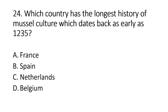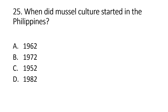Number 24. Which country has the longest history of mussel culture, which dates back as early as 1235? A. France. B. Spain. C. Netherlands. D. Belgium. The answer is letter A, France has the longest history of mussel culture dating back to 1235. Number 25. When did mussel culture start in the Philippines? A. 1962. B. 1972. C. 1952. D. 1982. The answer is letter A, mussel farming started in 1962 at the Banica demonstration oyster farm in Cavite.